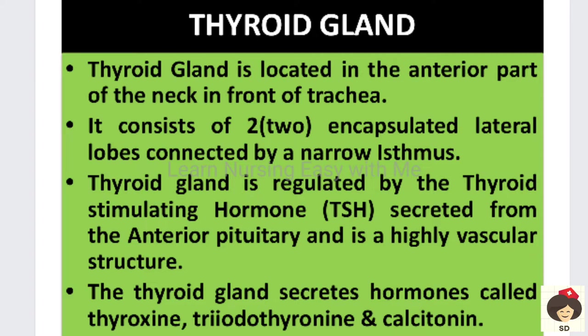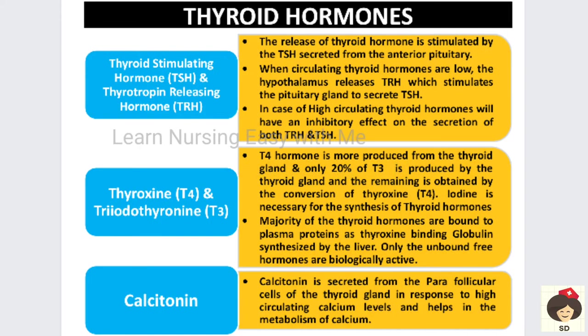The thyroid gland secretes a hormone called thyroxine, also known as T4, and triiodothyronine, that is T3. Triiodothyronine means three, so it is T3. The thyroid gland also secretes calcitonin. In terms of thyroid hormone regulation, there is thyroid stimulating hormone and thyrotrophin releasing hormone.